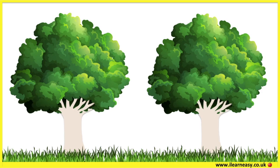At first, peppered moths varied in colour. Some were light and some were dark. Light moths were at an advantage because this allowed them to camouflage against the pale trees, allowing them to survive and reproduce. However, moths with a mutant black colouring were easily spotted and eaten by birds.